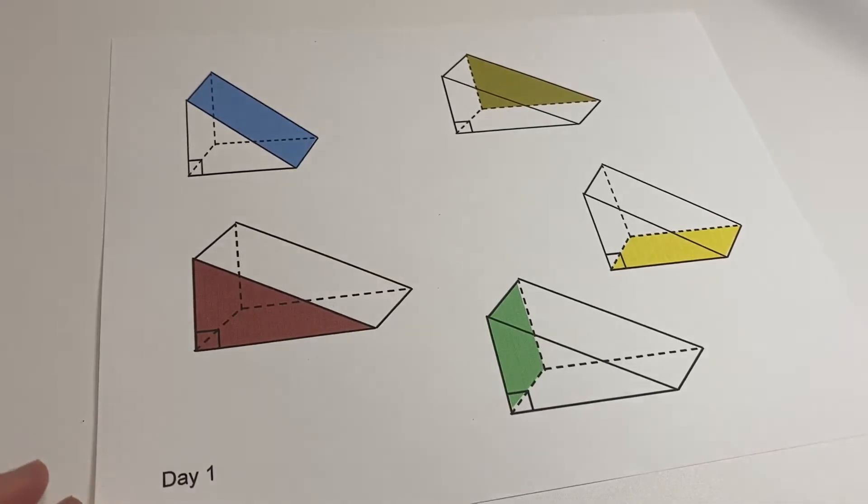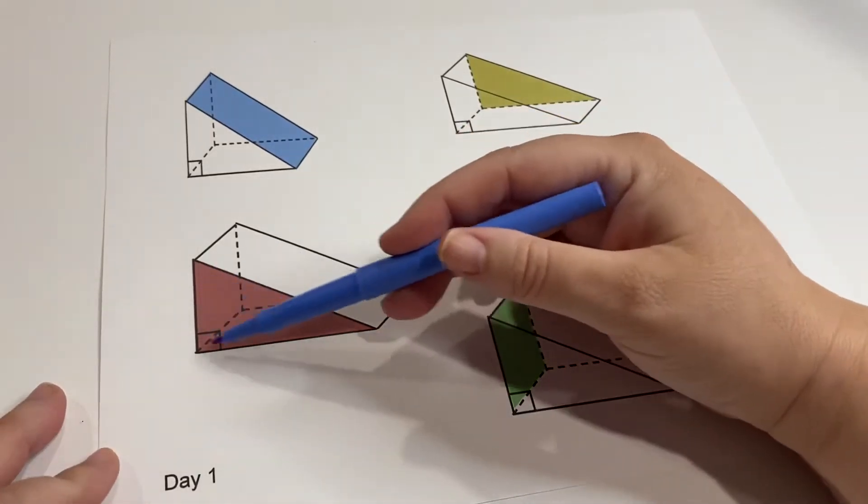So when we're talking about finding the surface area, we're talking about finding the area of each of these different sides.